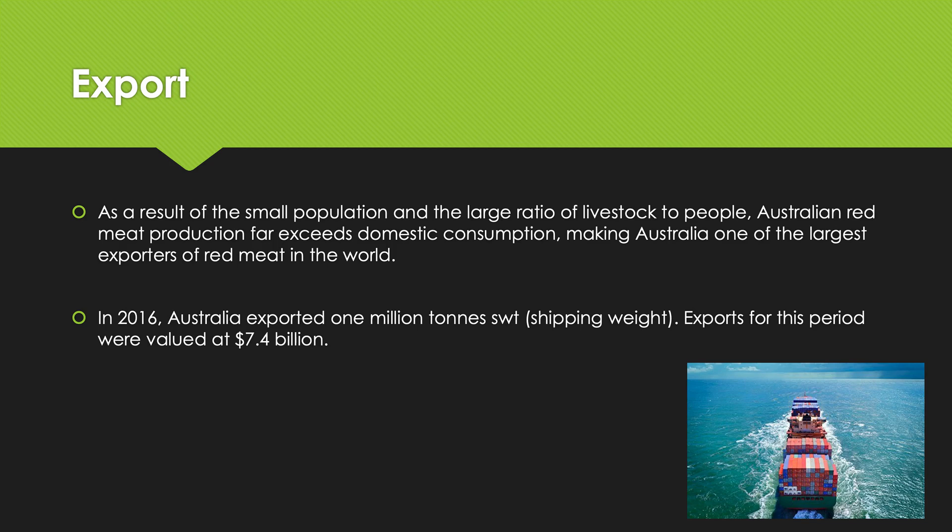International or export markets are going abroad. As a result of the small population and large ratio of livestock to people in Australia, Australian red meat production far exceeds domestic consumption — making Australia one of the largest exporters of red meat in the world. In 2016, Australia exported one million tons of beef, and exports for this period were valued at 7.4 billion dollars. That's a huge boost to the Australian economy.